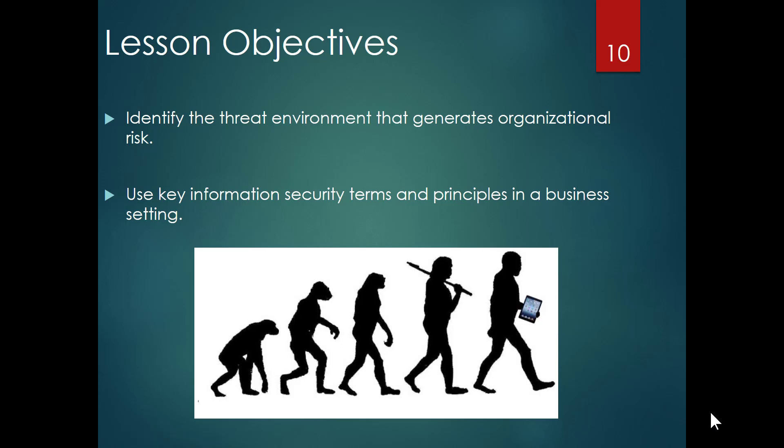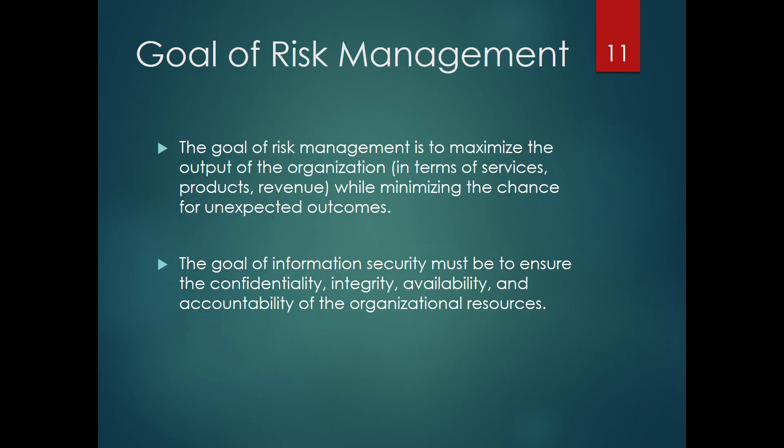Welcome back. This is the third of eight videos on chapter one, and what we're doing during this particular video is getting into some of the basics of risk management, differentiating it between information security, and we're going to talk about some key security terms and principles. It's a pretty short video focused on some key components. You'll also learn the McCumber Cube and why that's important. So let's start with that differentiation.